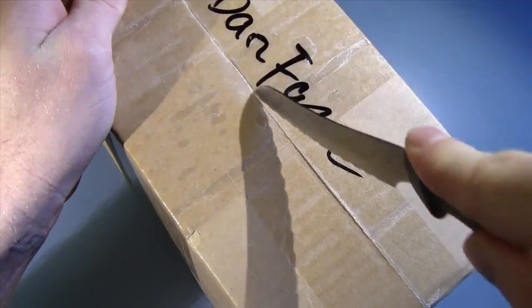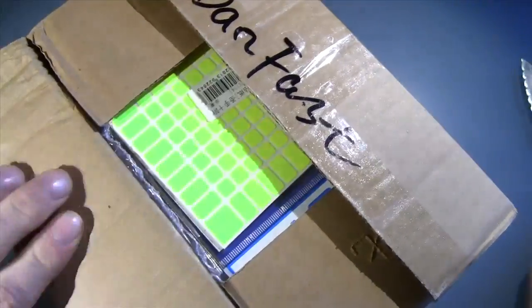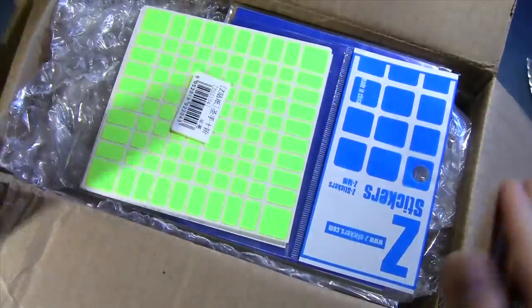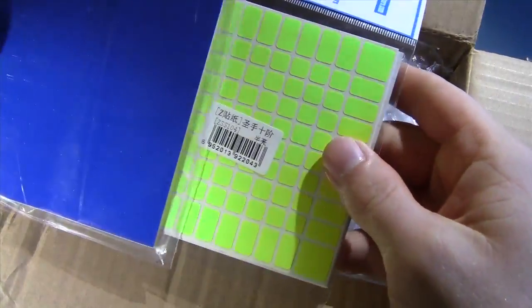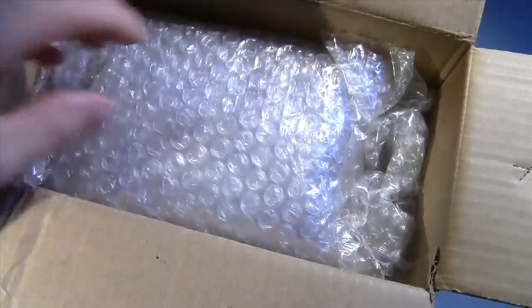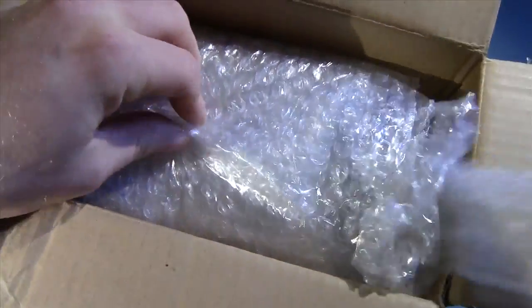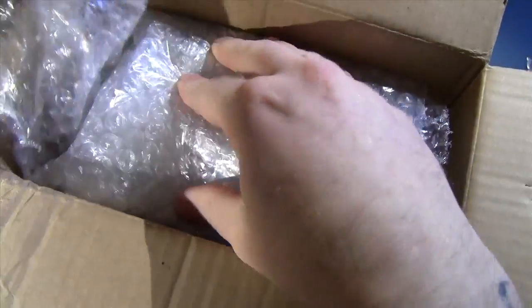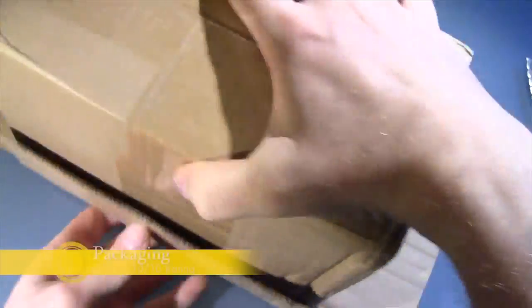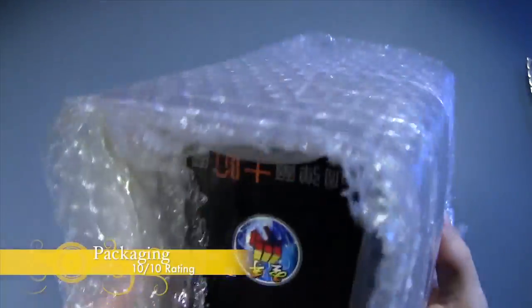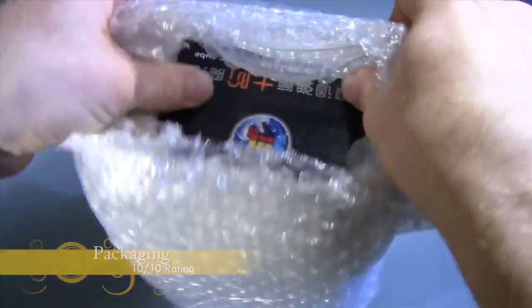First thing I see is a set of stickers, and then another set of stickers. So I'm already getting an idea of how big this puzzle is. Let's get in here. Some bubble wrap, some more bubble wrap. Let's just turn it upside down, lift the box away. There is the puzzle.